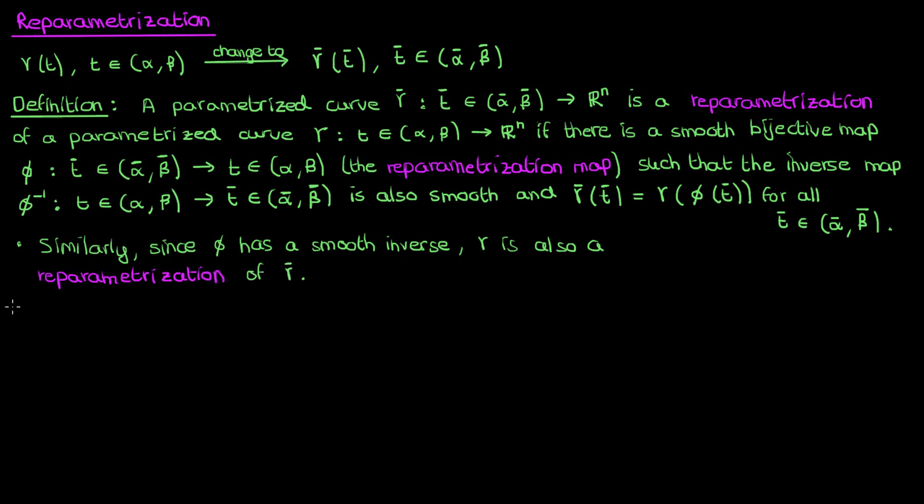Now this is quite a lot of math jargon to take in, so let me put things into context with an example. Suppose I have a circle of radius 1 given by x² + y² = 1. One way to parametrize this curve is to use γ(t) = (cos t, sin t), where t is between 0 and 2π. This should be pretty easy to understand if we take cos²t + sin²t we'll get 1, just like how x² + y² = 1 is the equation of our circle.